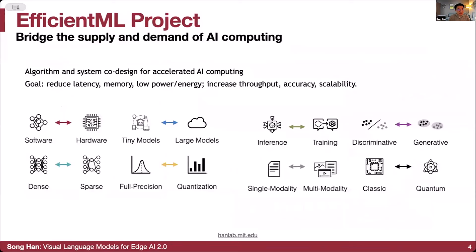The goal of the efficient ML project is to bridge the gap between the supply of computing and the demand for AI computing. With algorithm and system co-design, we want to reduce the latency, memory, power, and energy, while increasing throughput, accuracy, and most importantly scalability. We work on software-hardware co-design for both tiny models and recently large language models.